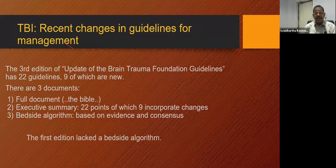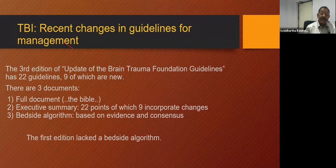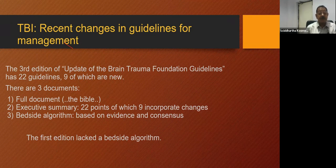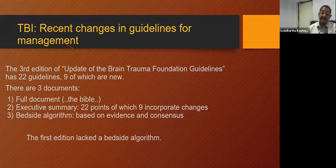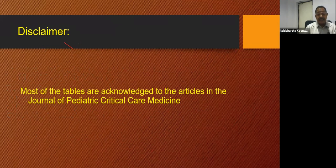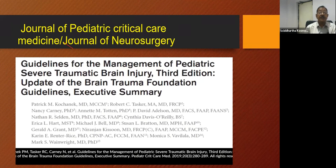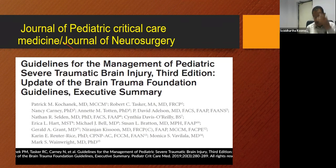The second part covers traumatic brain injury — recent advances and changes in the guidelines for management. The third edition of the Brain Trauma Foundation guidelines update has 22 guidelines, nine of which are new. There are three documents: a full document, an executive summary containing 12 points of which nine incorporate changes, and a bedside algorithm based on evidence and consensus. New groups of recommendations have emerged, with all previous recommendations based on level of evidence related to outcome, death, or mortality.